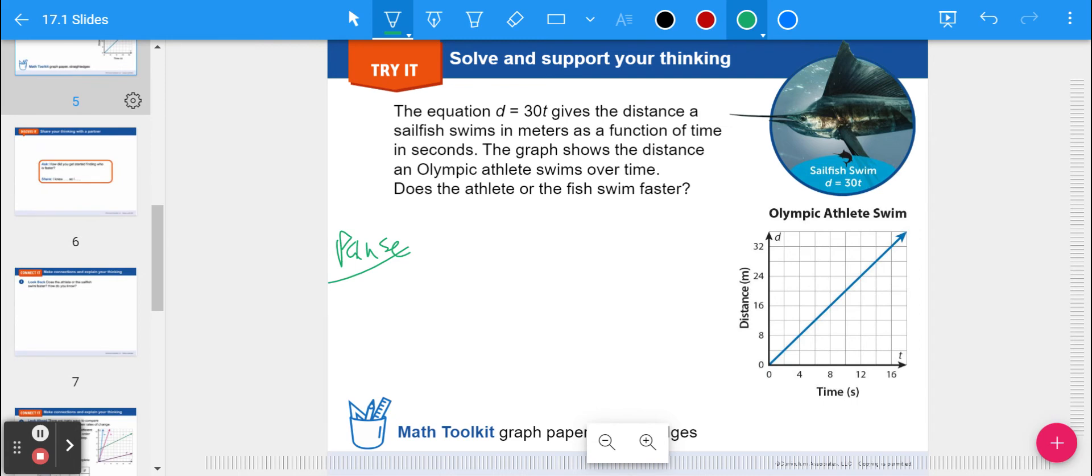Alright, looking at the graph of the Olympic swimmer, that's where we can find our rate of change or our slope by doing rise over run. So you can pick any two points. You can go from 0, because that's a point on here. You can go up to 8. So it goes 8 meters. That's our rise in 4 seconds. So that's just one example. So for the swimmer, we have 8 meters per 4 seconds.